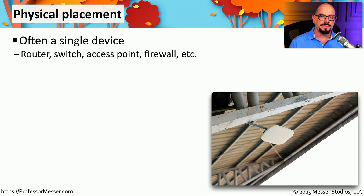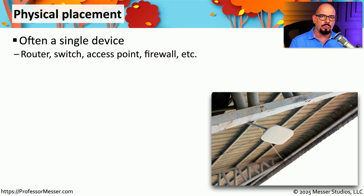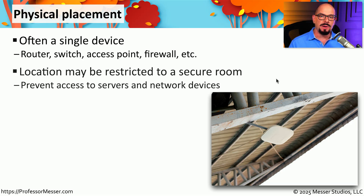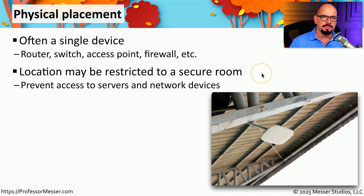In a small office home office environment, there's usually a single device that has multiple features — it might be a router, a wireless access point, a switch, a content filter, and a firewall all in one device. That device is usually located somewhere close to the connection coming in from the internet service provider. In a small office, you might have multiple devices, a number of servers, and other pieces of equipment — all of that equipment might be stored behind a locked door or in a secure room.